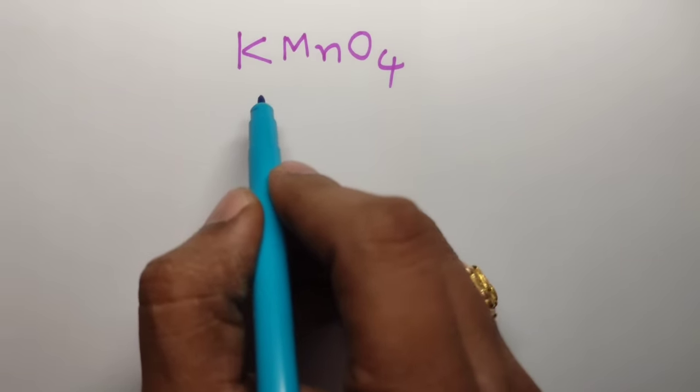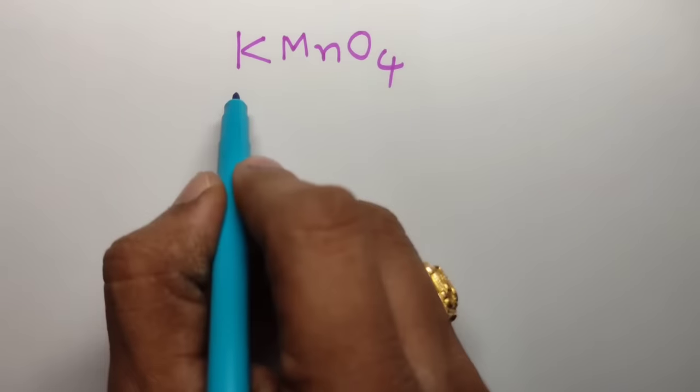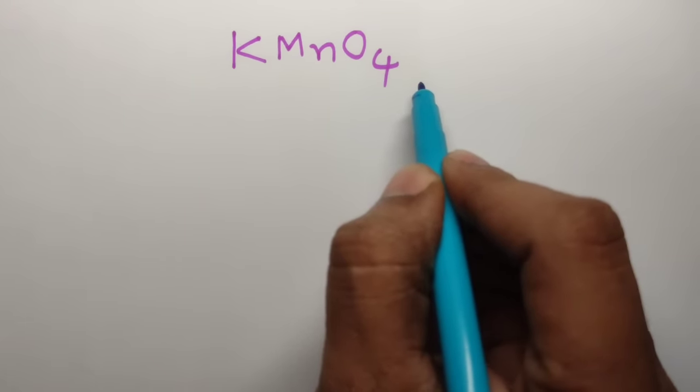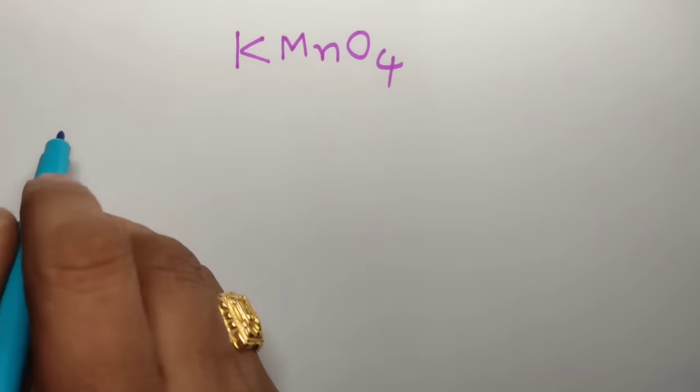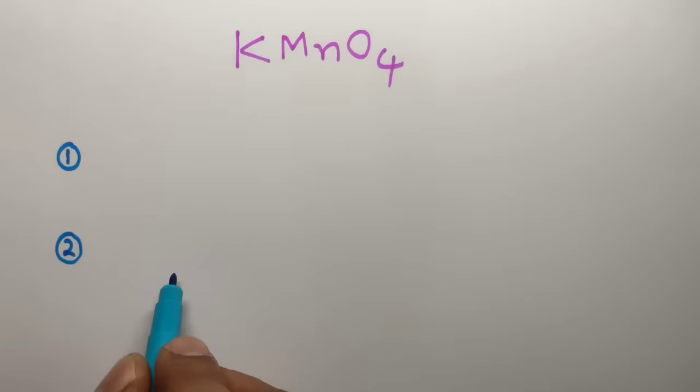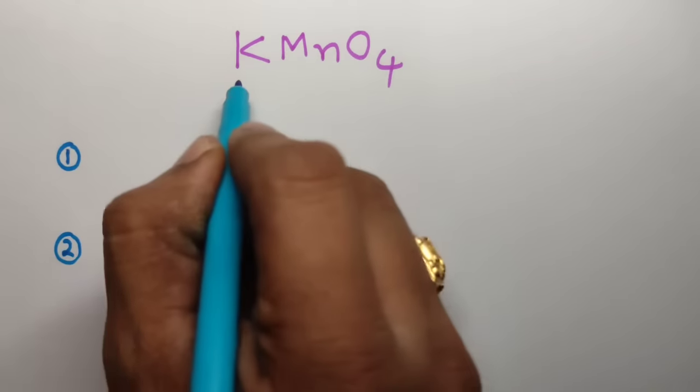Hello students, welcome to ASN Chemistry. Today I am going to discuss a trick to remember the preparation of KMnO4, potassium permanganate. Here two steps are there: step number one and step number two.